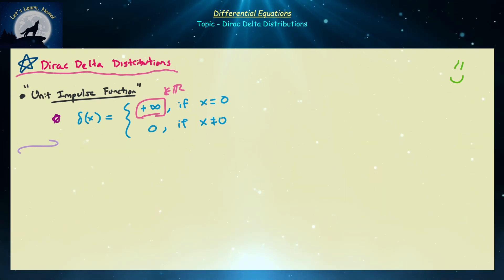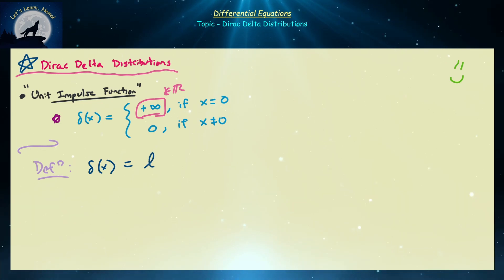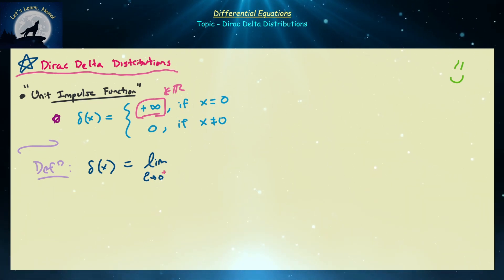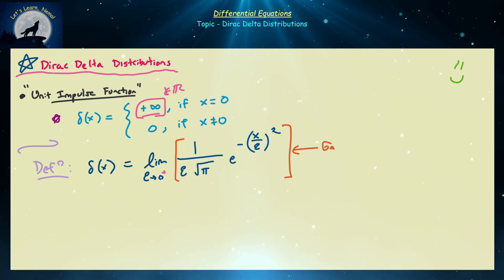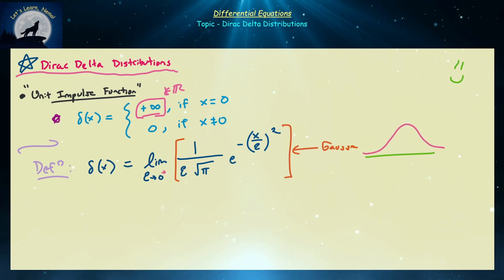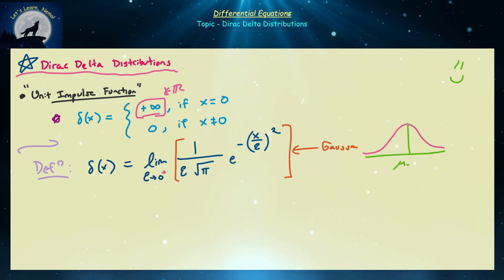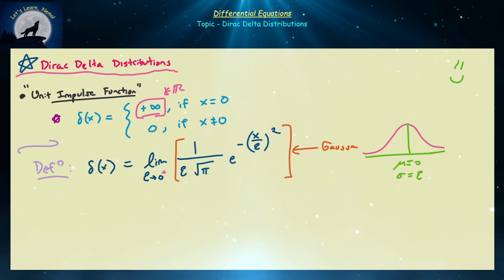The definition we'll work with today is a limit definition: δ(x) is defined as the limit as ε → 0⁺ of (1 / (ε√π)) · e^(−(x/ε)²). If you've taken any course on probability distributions, you'll recognize this as a Gaussian function — the bell curve. It has mean zero and standard deviation ε, which gets smaller and smaller as ε → 0. So Dirac delta is a limit of a Gaussian.